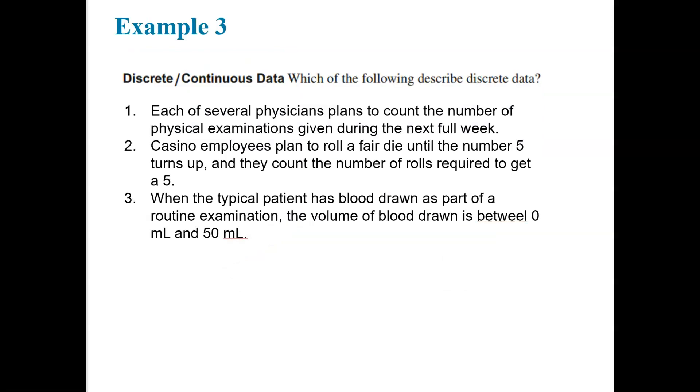So let's take a look at this example. So which of the following describe discrete data? So each of several physicians plans to count the number of physical exams given during the next full week. Casino employees plan to roll a fair die until the number five turns up, and they count the number of rolls required to get a five. And three, when the typical patient has blood drawn as part of a routine exam. So looking at number one, they plan to count the number of physical exams. Is it possible to have a half of a physical exam? Are they counting halves and quarters and decimal by decimal? Or are they counting whole numbers? Are they counting? And in that case, they are. So that is going to be discrete.